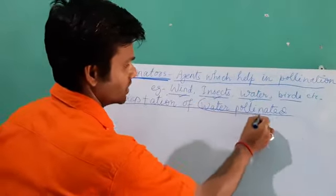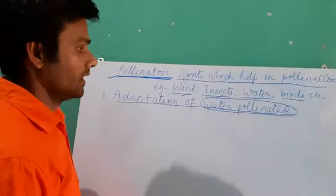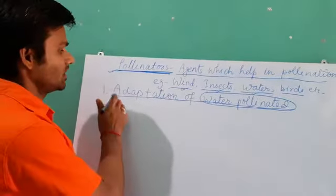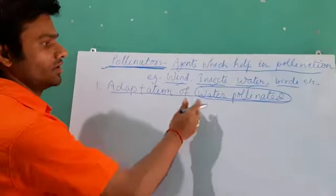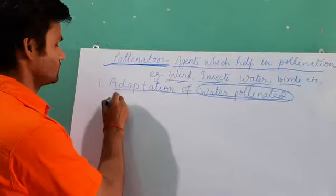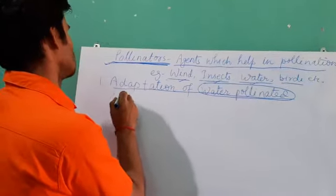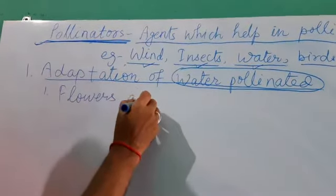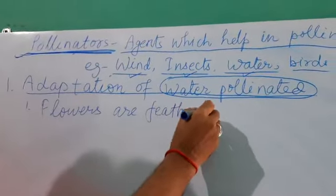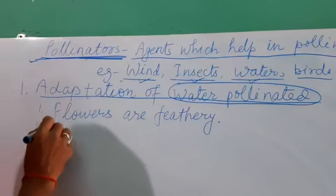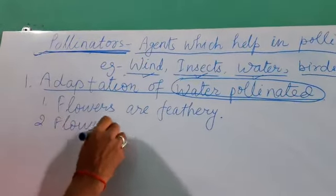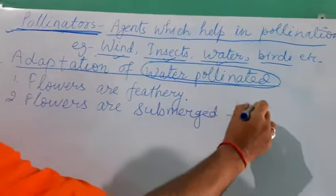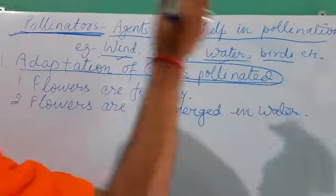Water pollinated flowers are called hydrophily. There are some adaptations found in water pollinated flowers. The first adaptation: flowers are hydrophilic.